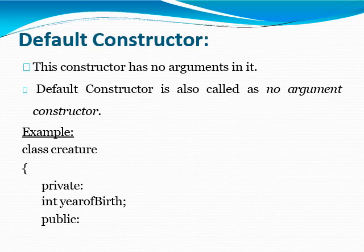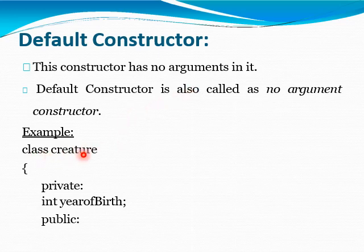The first one is the Default Constructor. This Constructor has no argument in it. A Default Constructor is also called a non-argument Constructor. For example, consider class Creature. In this class, a private member is an integer data type, year of birth is a variable, and the Constructor is defined in the public section.